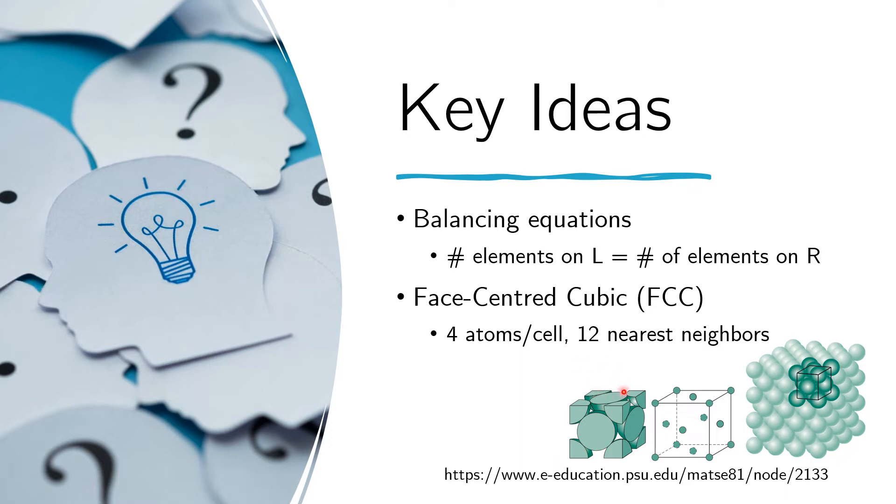And again, in that other half, four other atoms on the sides of that unit cell are touching that other half. And therefore, there are four here. There are four here and four on the sides. And that's why we get 12 nearest neighbors.